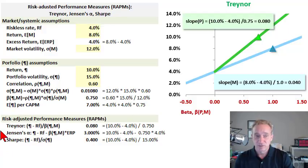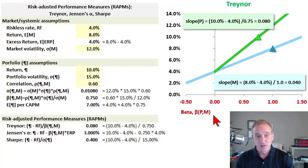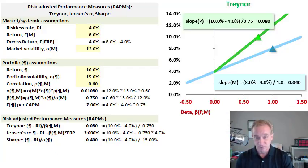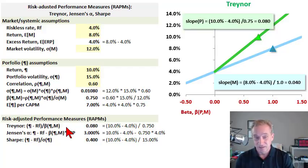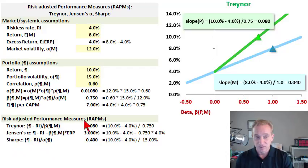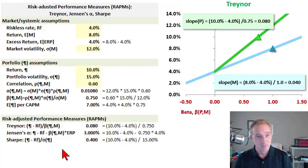I want to look at these three popular performance measures not just as abstract mathematical functions, but rather interpreting them in the context of the security market line and capital market line reviewed in the previous three videos. These three measures are the Traynor measure, developed by Jack Traynor, Jensen's Alpha, and the Sharpe ratio. They are part of a class called risk-adjusted performance measures, or RAP measures—return measures adjusted for some measure of risk.